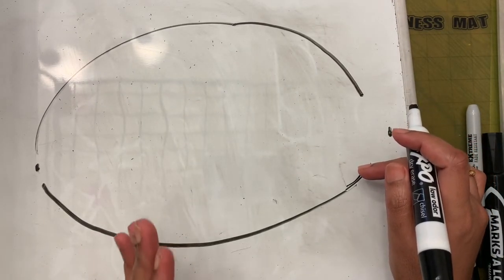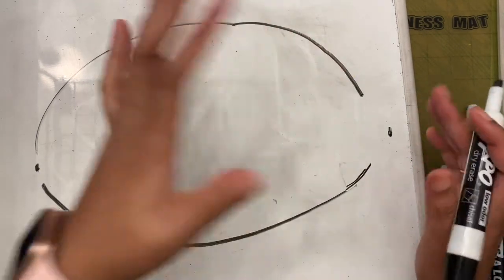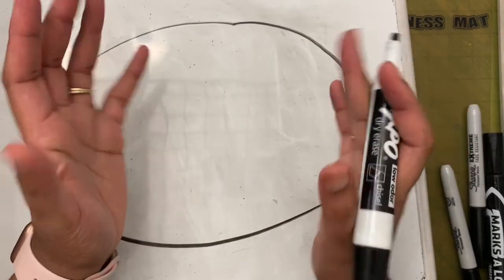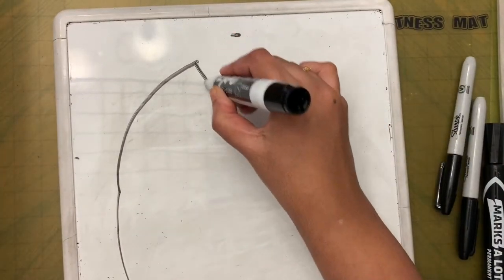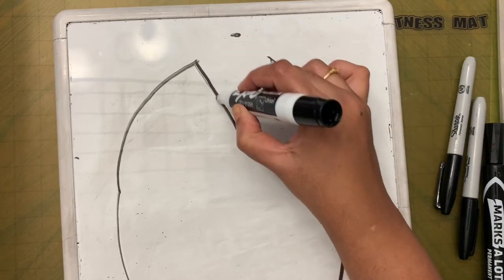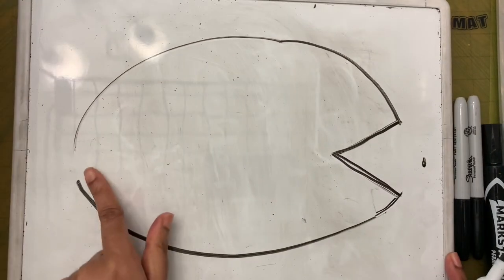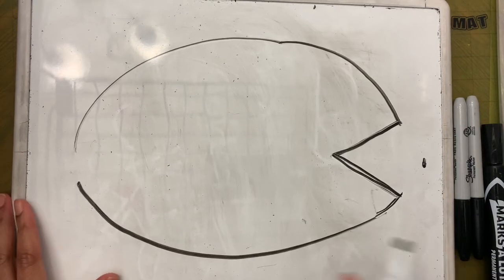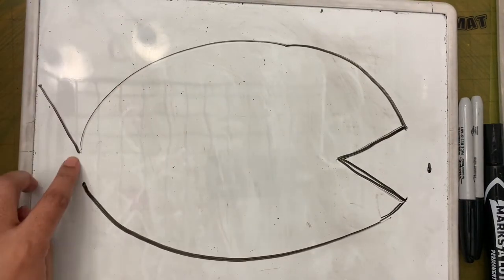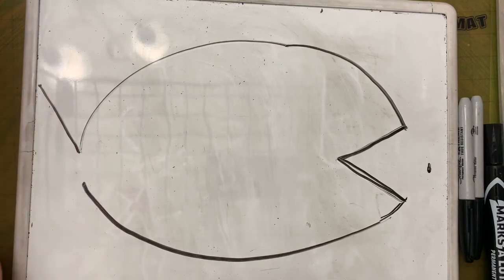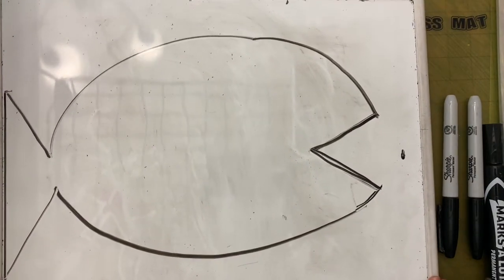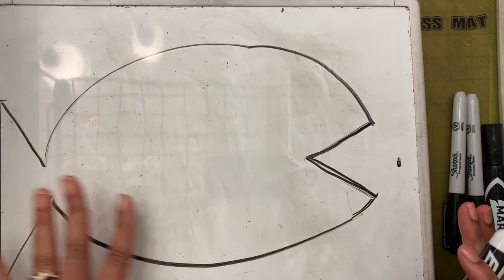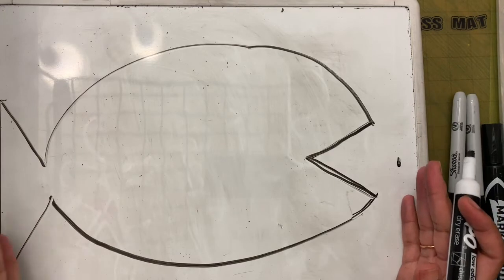This is a fish with an open mouth. I'm going to turn that open part into a mouth by making a V shape. Now we have almost a shape, but the line is not closed yet. To close it, I'll make the tail: a line going upward and a line going downward, then connect these two. Now we have the fish - a closed shape!